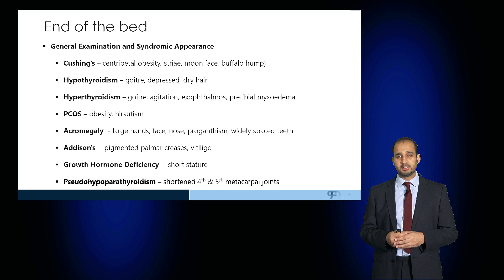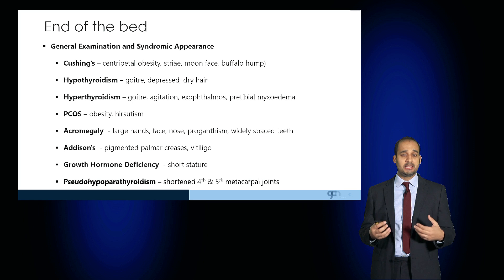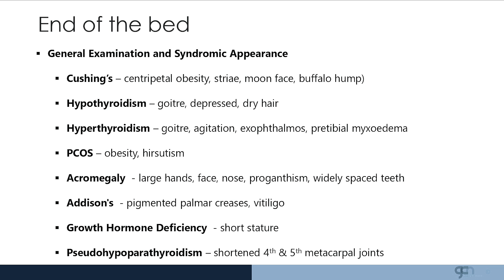Acromegalic patients may appear to have large hands, an enlarged face and nose, prognathism which is a protrusion of the lower jaw, along with widely spaced teeth. Addisonian patients may have pigmentation of their palmar creases or signs of other autoimmune conditions such as vitiligo.